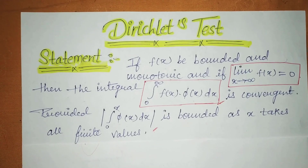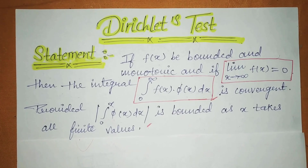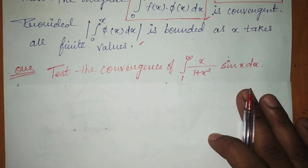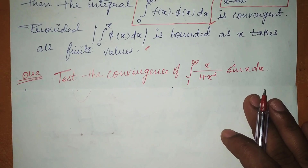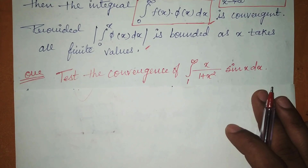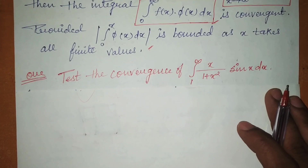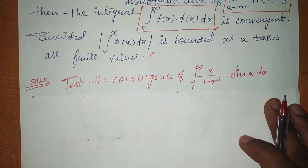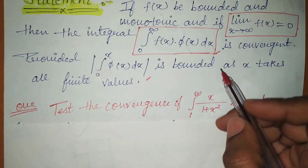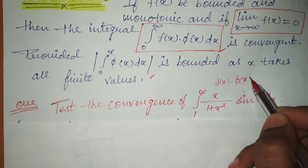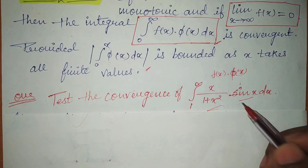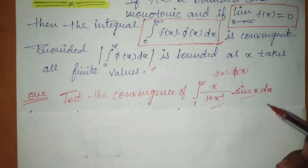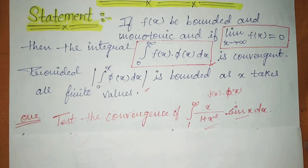You will understand the test from the example. This is the format of the question: test the convergence. You have to focus on which test to apply. Sometimes the question will specify the test — comparison test, Dirichlet test, or Abel's test. If not specified, you must identify the format. Here you see one function fx and one function φx, in multiplication. This format cannot be solved with comparison test; it can be solved with Abel's test or Dirichlet test.